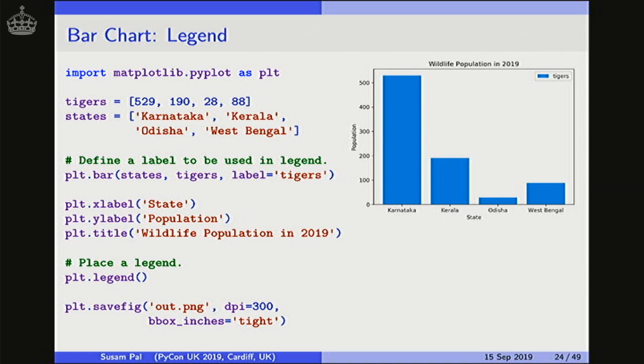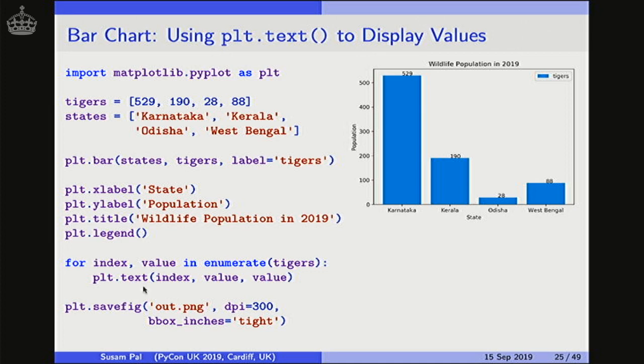Okay, so let me improve this further. The next thing I want to show is the number of tigers on each bar column here. For example, if I were to look at this graph on its own, I should be able to tell that there are 529 tigers in Karnataka, 190 tigers in Kerala and so on. So how do we put those numbers on these bar columns. So to do that, we use this function called text. So this text function from the pyplot module can take any arbitrary text and put it at arbitrary locations on the plot.